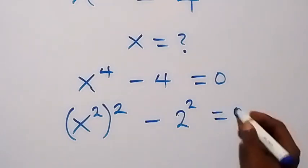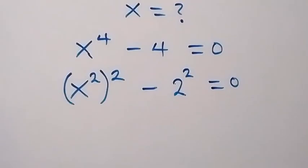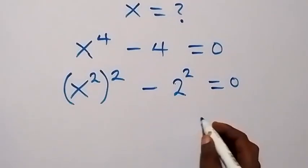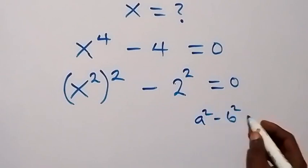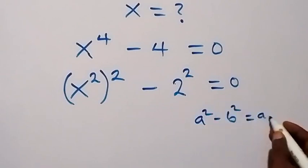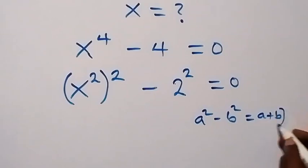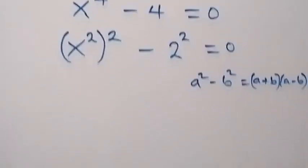Then equals to 0 here. Then when we apply the difference of 2 squares, when we have a squared minus b squared, this will give us a plus b multiplied by a minus b.